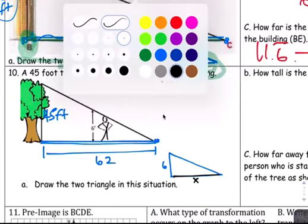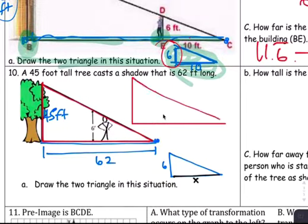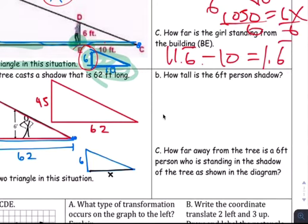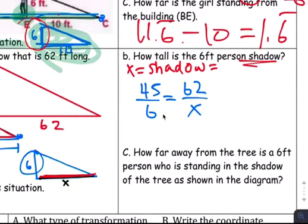So the big triangle, if you look at the big triangle is right here. It's 45 and this is 62. So how tall is the 6-foot person's shadow? That's this. That's X. X equals the shadow. Set it up. It's always big over small, right? 45 over 6 equals 62 over X. So 62 times 6, 372 equals 45X. Divide by 45.